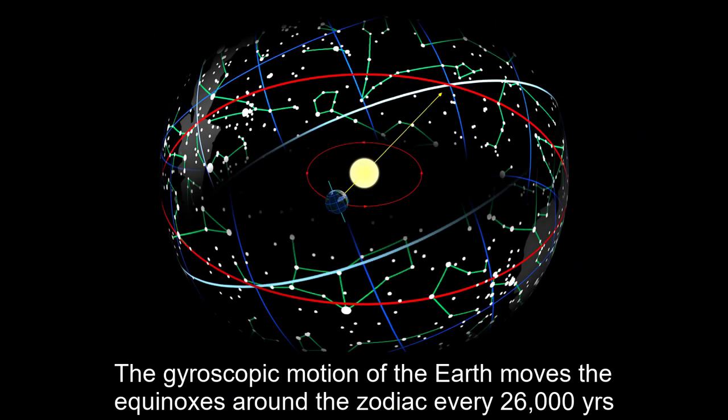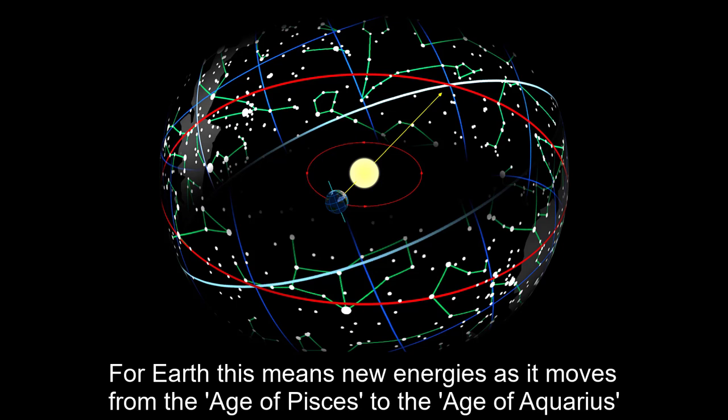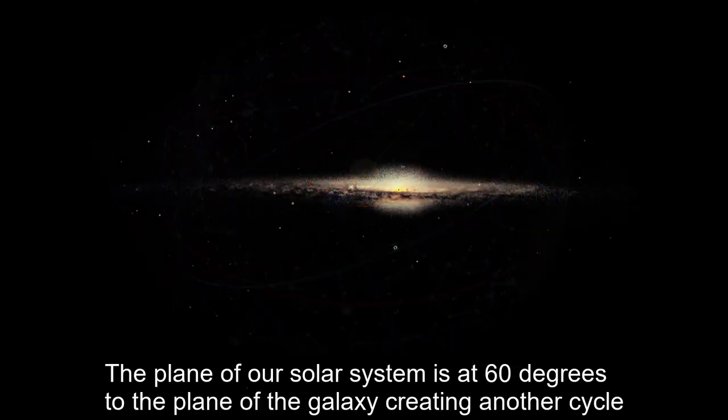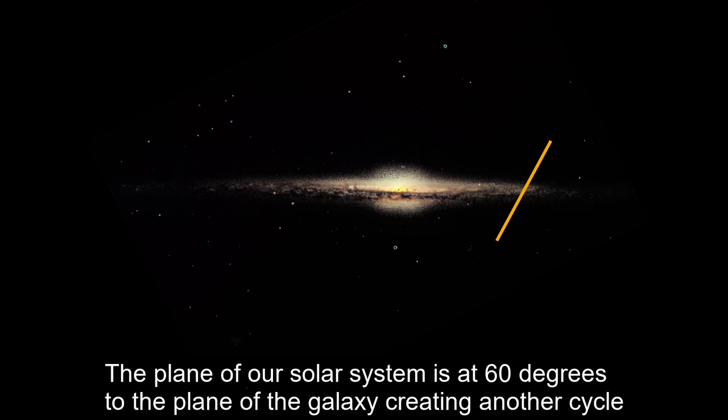The gyroscopic motion of the Earth moves the equinoxes around the zodiac every 26,000 years. For Earth, this means new energies as it moves from the age of Pisces to the age of Aquarius. The plane of our solar system is at 60 degrees to the plane of the galaxy, creating another cycle.